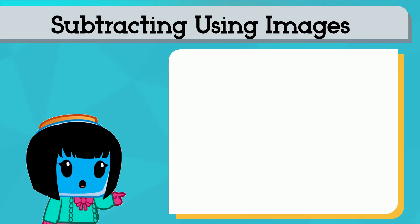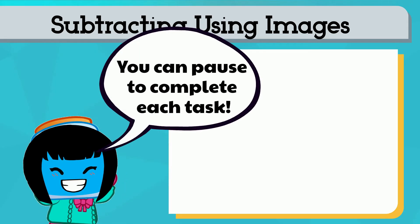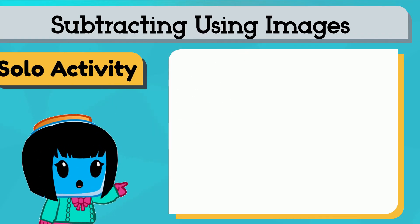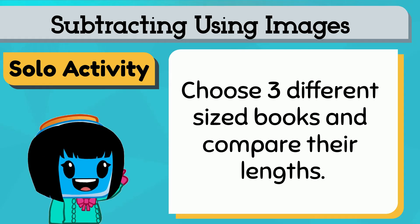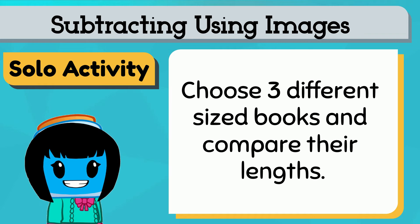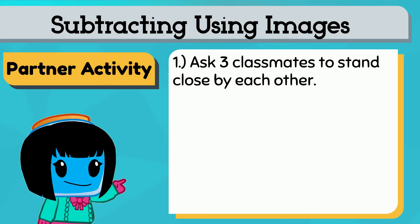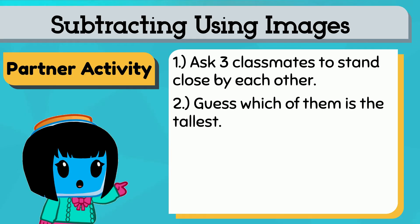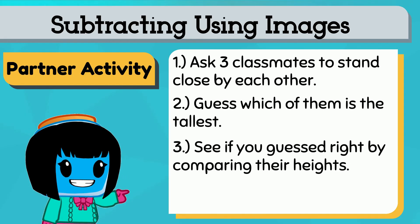Let's keep practicing by choosing objects around your classroom or at home. Push pause while you complete each task. On your own, choose three different sized books and compare their length. With a partner, ask three classmates to stand close by each other, predict who you think will be the tallest, then see if your prediction is right by comparing their heights.